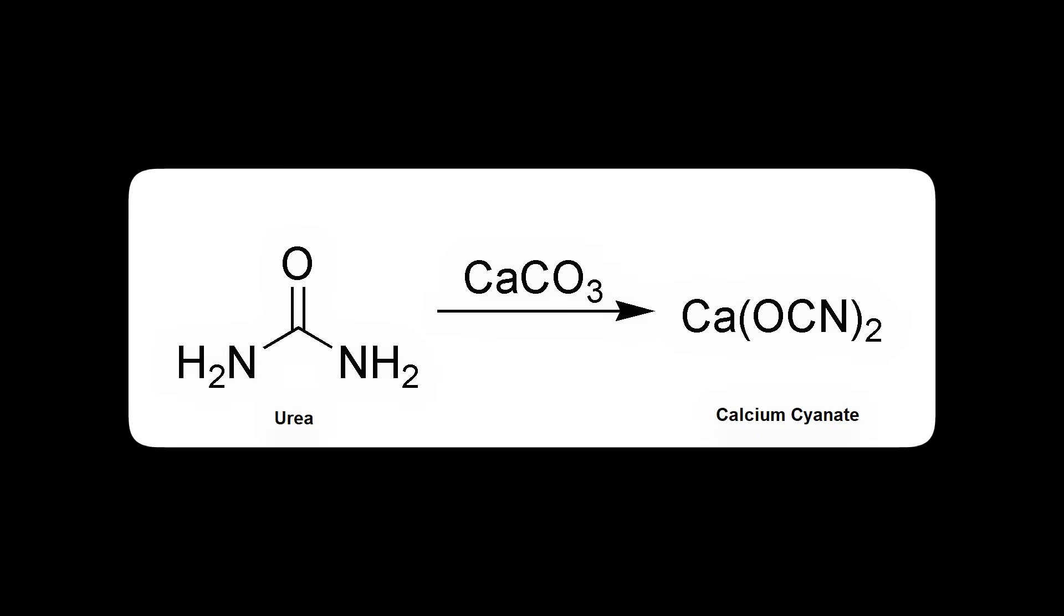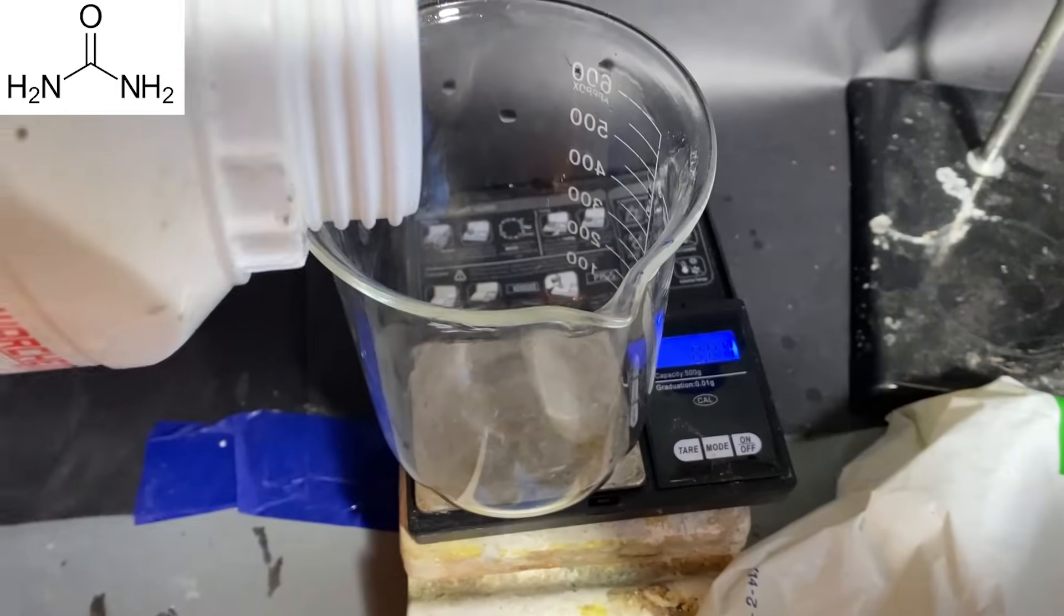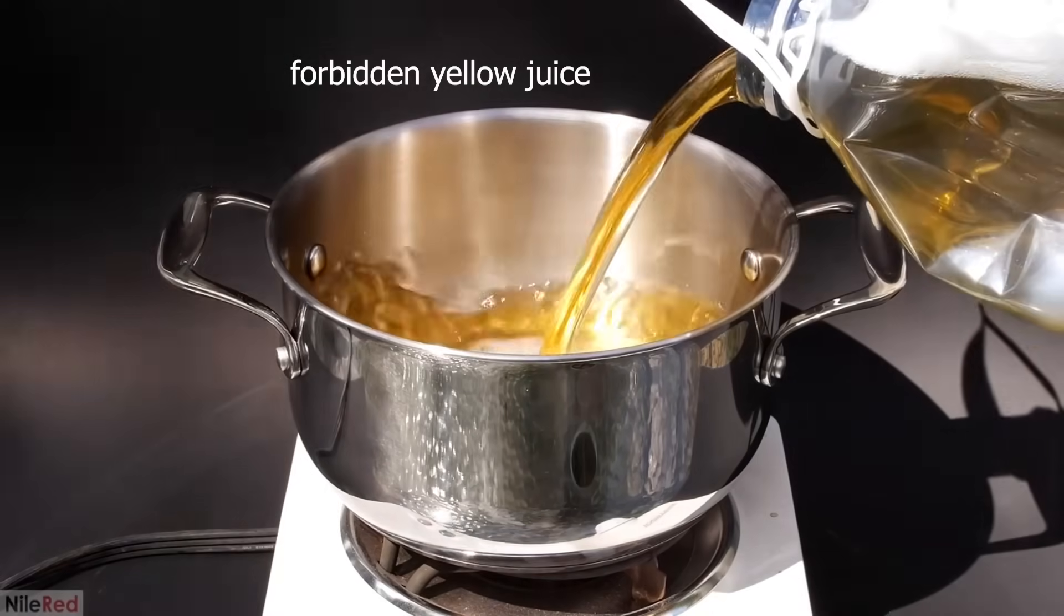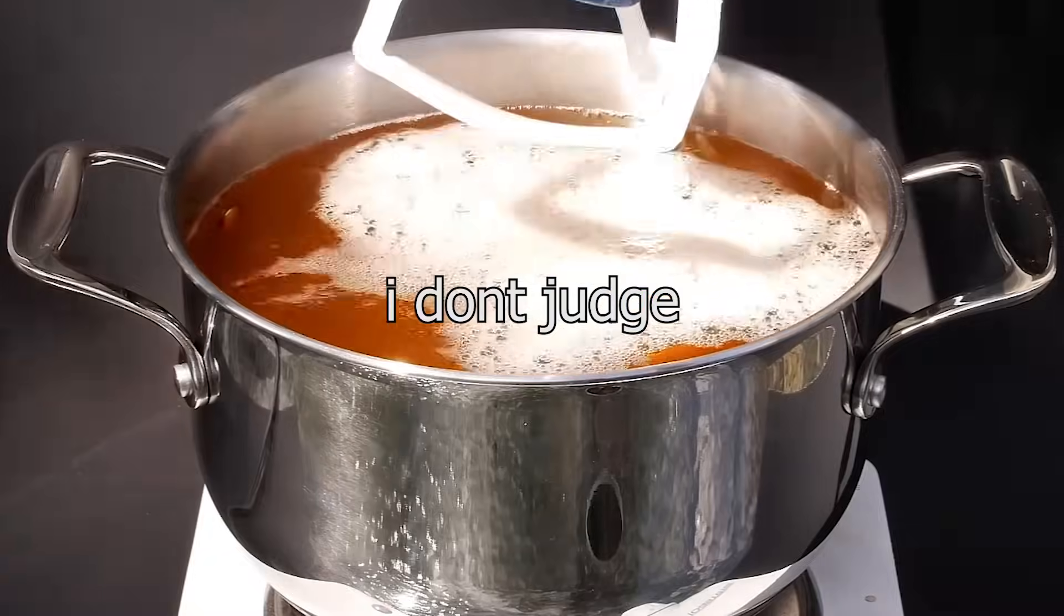For the first step we'll be turning urea into calcium cyanate using some calcium carbonate and heat. Urea is something that you can get at your local hardware store in the fertilizer section, and you can also extract it from pee if you're really weird. I don't judge.